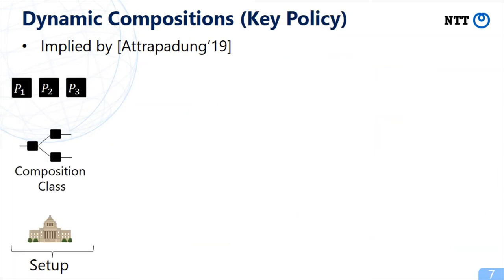The second type is dynamic compositions. Dynamic compositions are classified into two types: key policy and ciphertext policy.